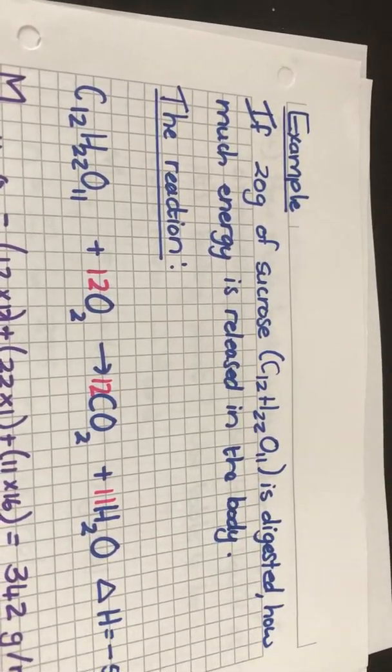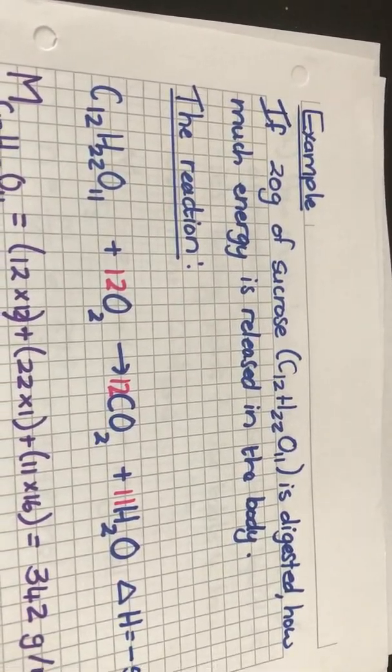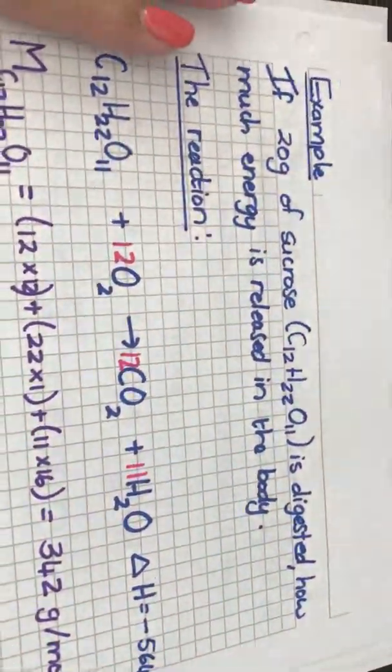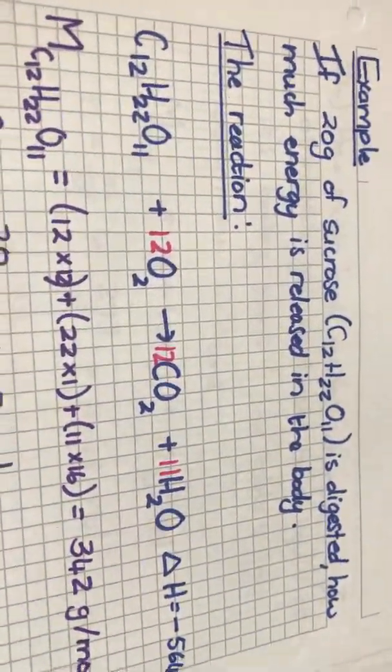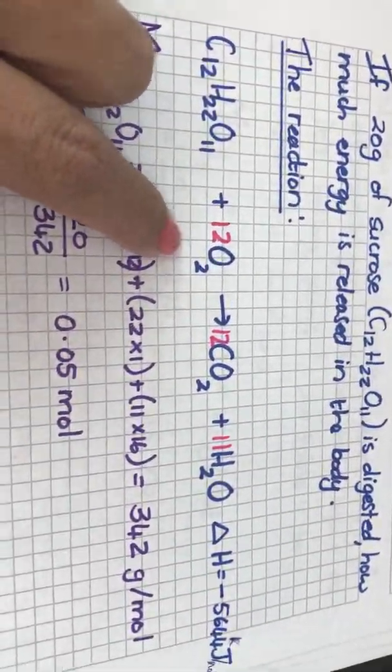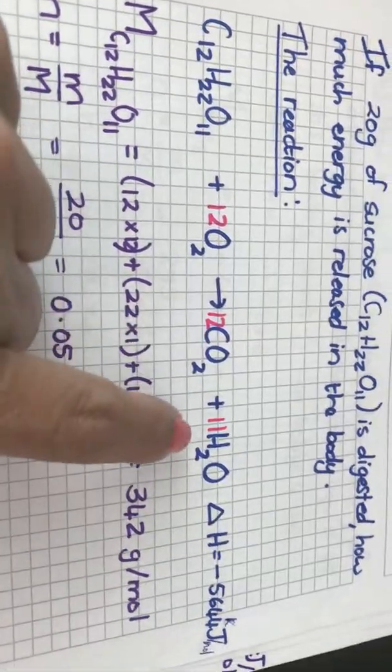Right, using the enthalpy values for chemical reactions, and one of the ones that are very prominent in this chapter is the combustion. Now combustion is anything that burns in oxygen and the golden rule is for anything that burns in oxygen my byproduct is carbon dioxide gas and water.